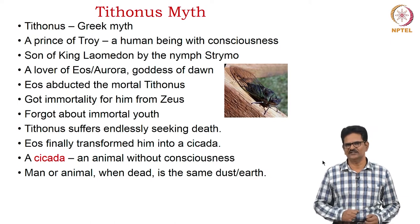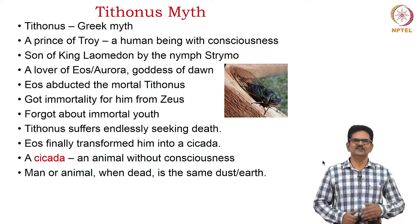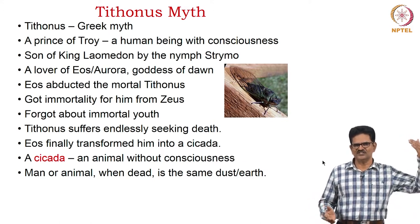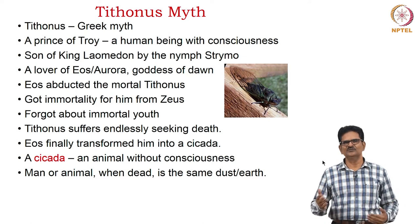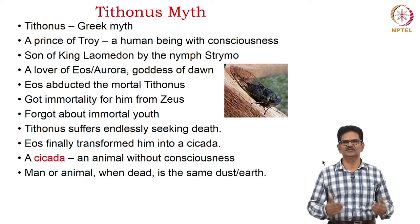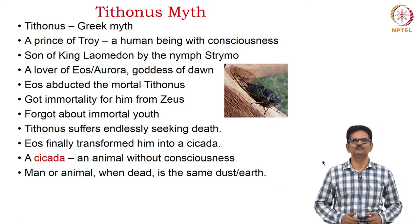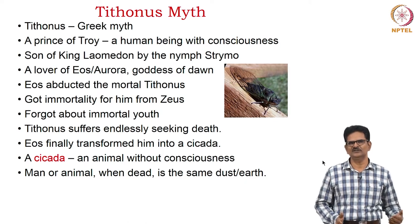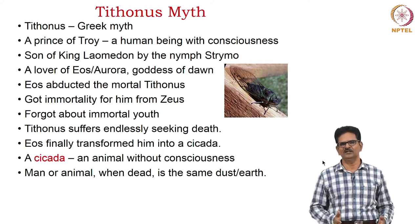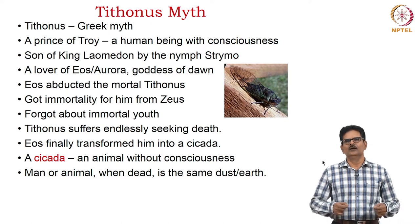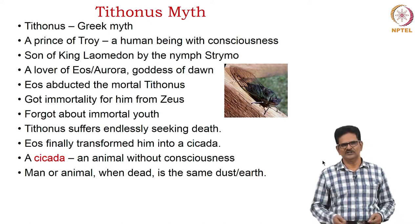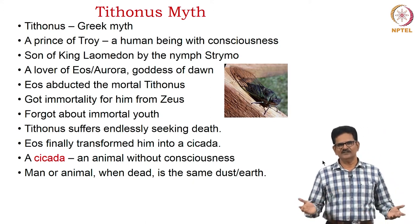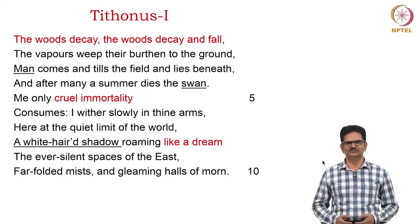A cicada is an insect without consciousness — from man with consciousness to an insect without consciousness. That's the kind of degeneration we notice in this myth. Man or animal, when dead, is the same dust or earth. But in the case of Tithonus, he is prevented from dying because of this blessing from Zeus through Eos. Eos is the Greek name; Aurora is the Roman name. Now let's read this poem, Tithonus.